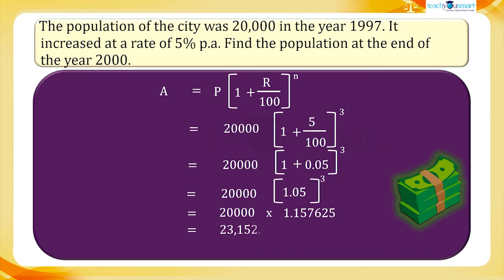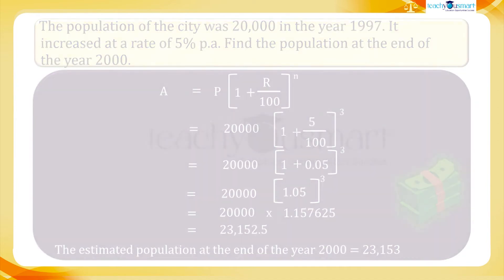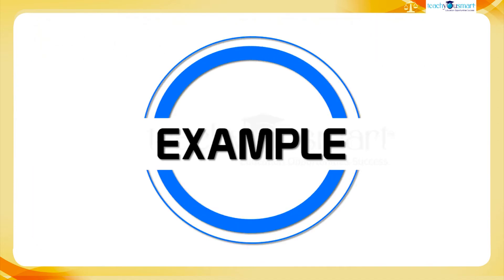Equals 23,152.5. So the estimated population at the end of the year 2000 equals 23,153. What is to be done if there is a decrease in cases? Let's consider another example.